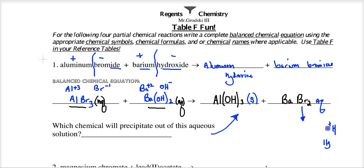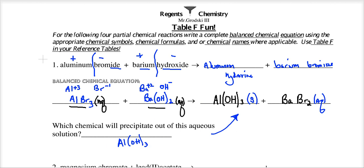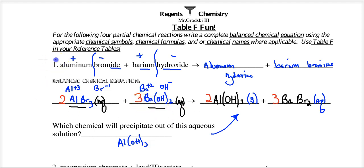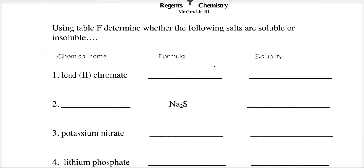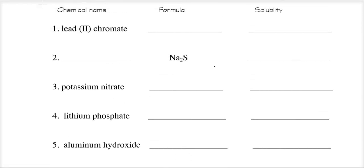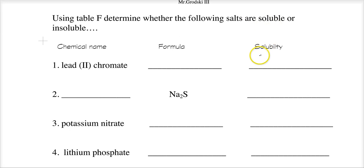We do have a precipitate — aluminum hydroxide. Now balance: 3 bromides on the left side, 2 bromides on the right, so we put 3 before AlBr₃ and 2 before BaBr₂. That gives 2 aluminums on the left, so put 2 before Al(OH)₃. Two times 3 gives 6 hydroxides, so we need a 3 before Ba(OH)₂ — and that gives 3 bariums balanced. That's problem 1 worked out. Now try problem 2, and use Table F to finish problems 1 through 7. Also find the formula for lead(II) chromate and identify its solubility.